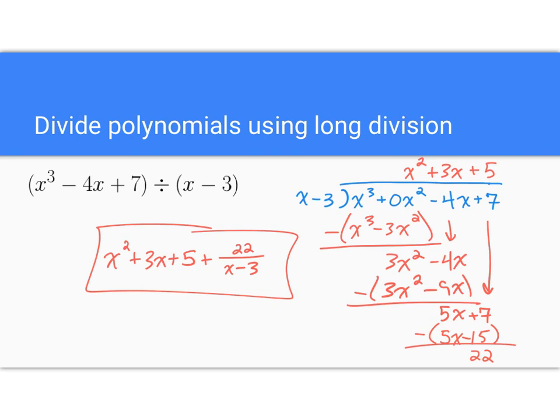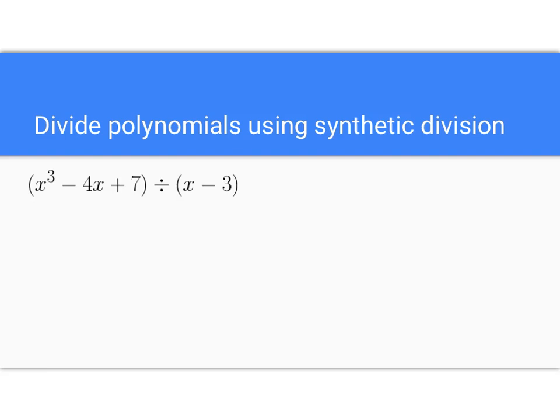So it's x squared plus 3x plus 5 plus 22 over x minus 3. Victory. And so then just looking at that same situation with synthetic division, it has to be in the form x minus a. So in this case, a is 3. That's what goes in the box.